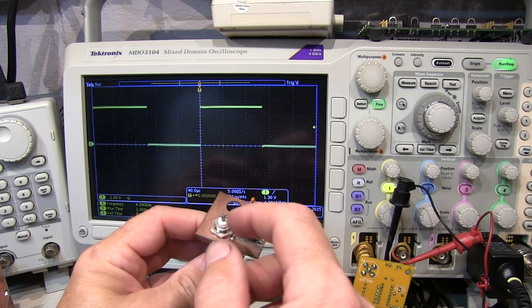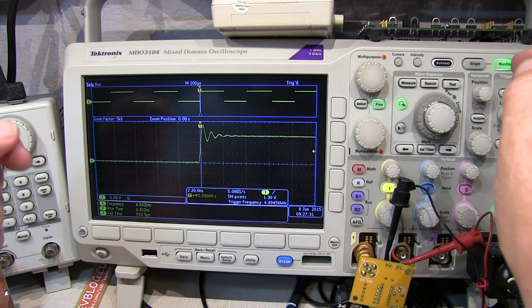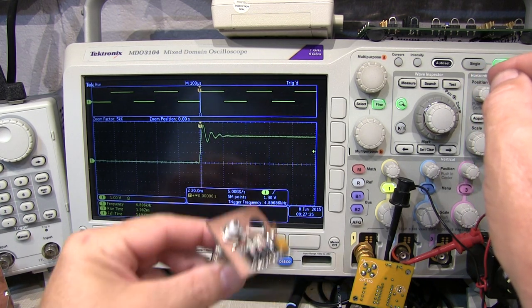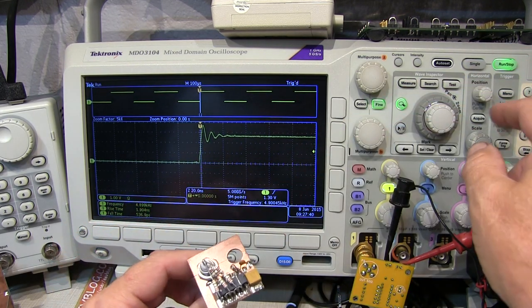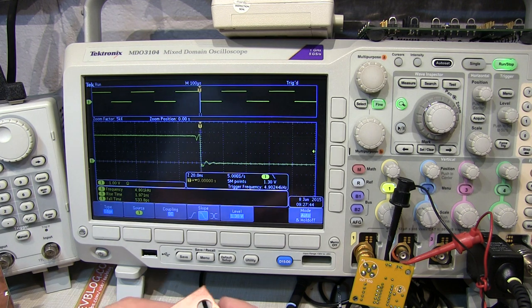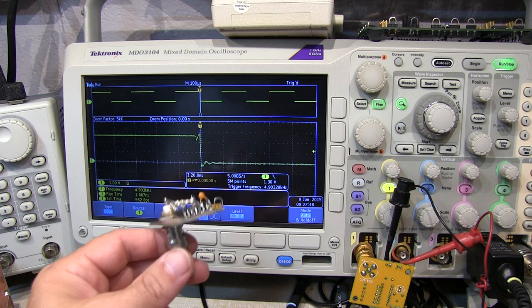If we zoom in again on that edge, the rising edge looks very, very similar. Same amount of ringing that I had on mine. That's just characteristic, I think, of the driver and the driver impedance. And again, let's go to the trigger and flip to the negative edge. And that falling edge looks really nice and sharp in about 550 picoseconds.